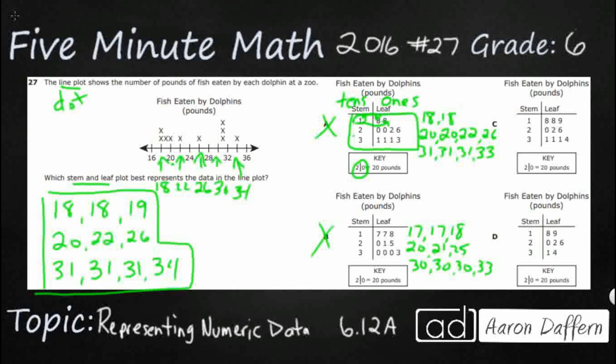So what are we going to do with C? Let's look at C. C has got 18, 18, 19, looks good. So it's got 20, 22, 26. That's looking good. So far we're good right here, and then it's got 31, 31, 31, and then 34 because you've got a three with three ones and then a four. So that is looking good here, and we can see that D is going to be wrong because it only has an 18 and a 19. It needs two 18s. So our answer is C.